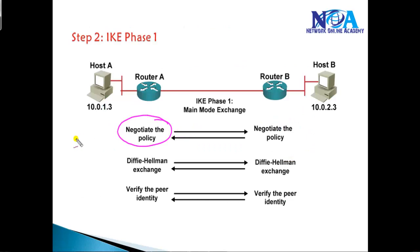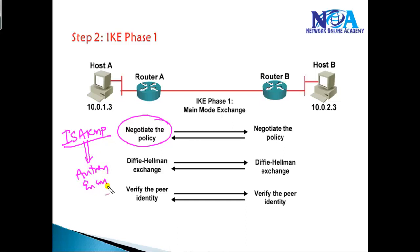Phase 1 is going to negotiate the policy — we call it the ISAKMP policy. In this policy we need to define: what authentication method you want to use, what encryption algorithm you are going to use, and what hashing algorithm you are going to use to control the traffic between the two VPN endpoints. That's what we call the secure channel.